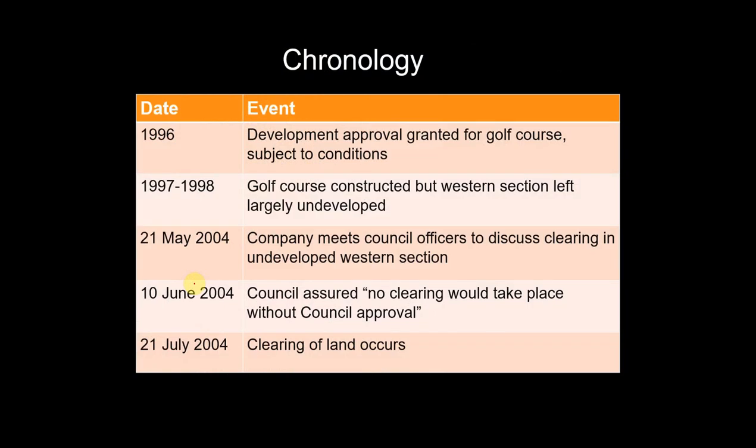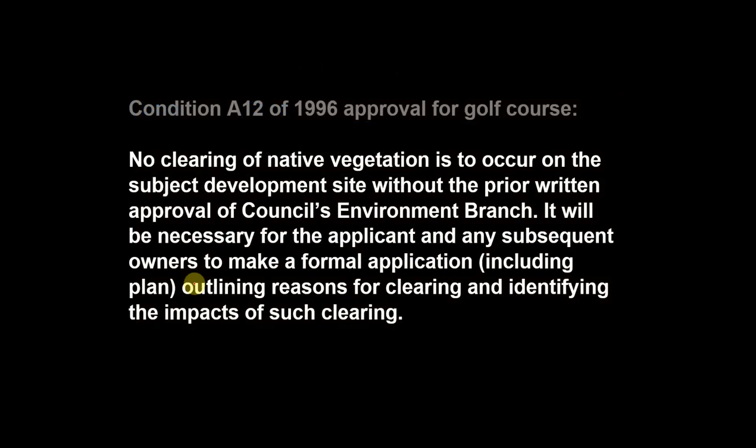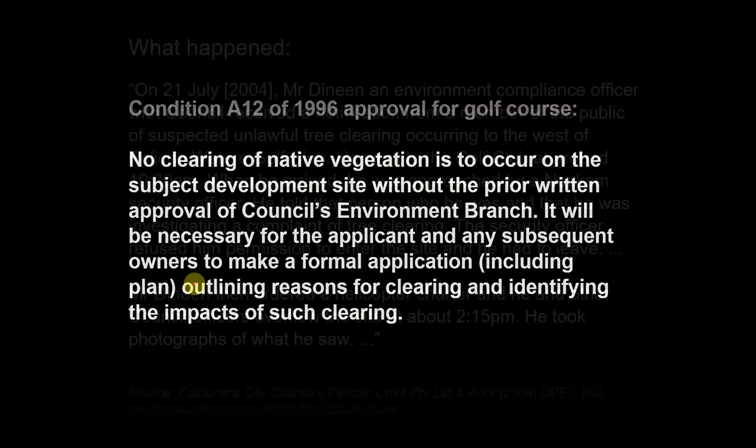Here's the chronology: the original development occurred in the 1990s and a development approval was granted for the golf course subject to conditions. In 1997–98 the golf course was constructed but the western section was left largely undeveloped. Then in 2004, a company that had acquired the land met with council officers to discuss clearing the undeveloped western section. Council said no — they wanted to retain those areas for conservation and fisheries values. The developer assured council that no clearing would take place without council approval, but then a month later, clearing occurred without notice to council.